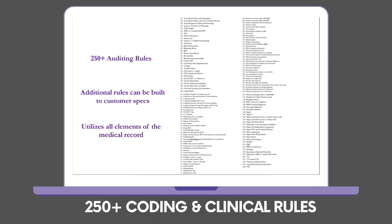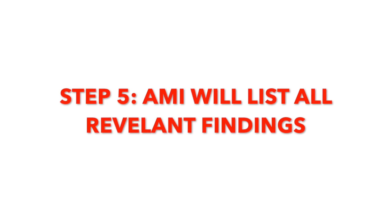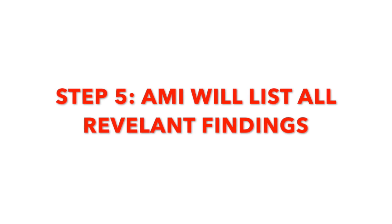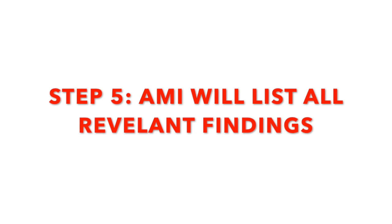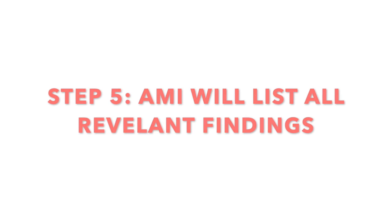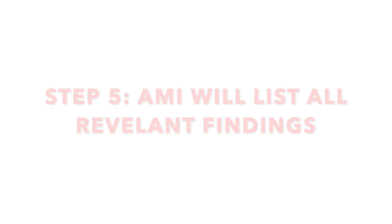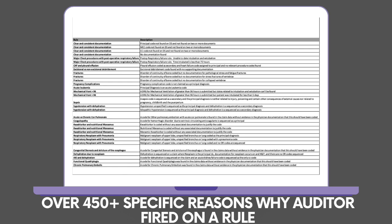Step five is where the AMI Auditor provides reasons for clinical and administrative findings — the declarative reasons why the AMI Auditor fired on a particular finding. For example, was the principal diagnosis COPD, or did the patient have asthma or reactive airway syndrome? The importance of this is directly tied to all aspects central to patient care, administrative and clinical quality, and payer reimbursement.